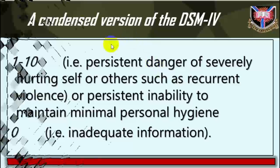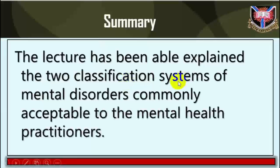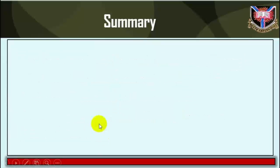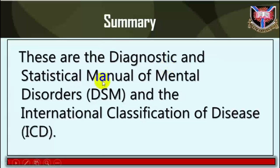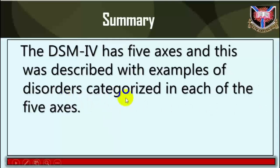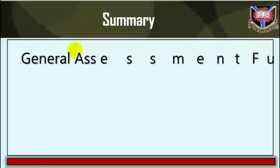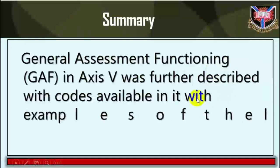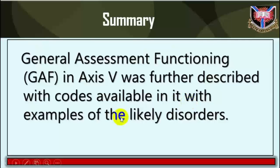Summary: This lecture has explained the two classification systems of mental disorders commonly acceptable to mental health practitioners — the Diagnostic and Statistical Manual of Mental Disorders (DSM) and the International Classification of Disease (ICD). DSM-IV was described with examples of disorders categorized in each of the five axes. The DSM-IV Global Assessment of Functioning (GAF) scale in Axis 5 was further described with codes and examples of likely disorders. End of Study Session 5. Thank you for listening.